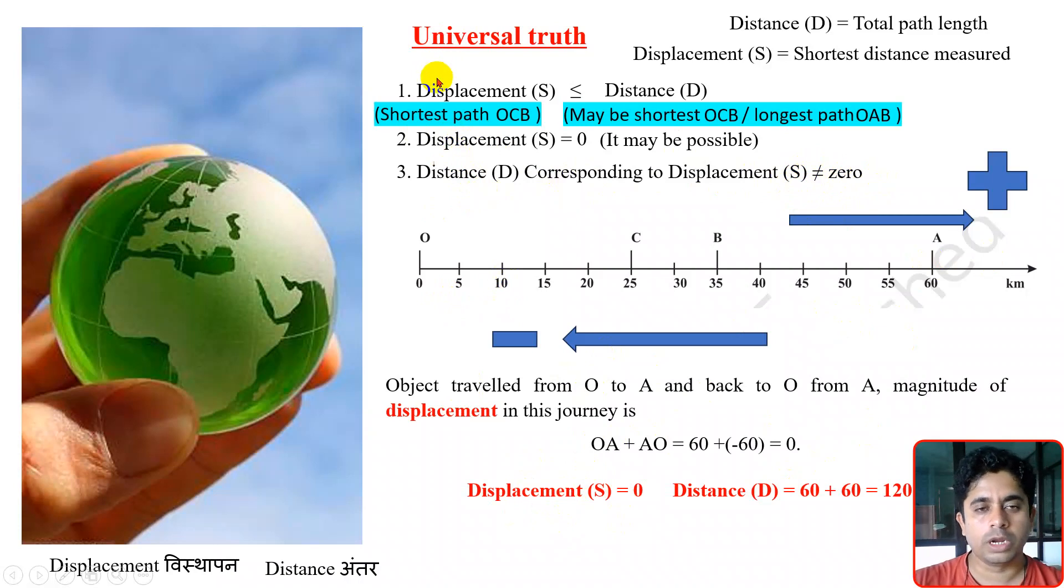So these are the three universal truths we have to remember: displacement is less than or equal to distance; displacement may be zero; but distance is always a non-zero quantity. Thank you.